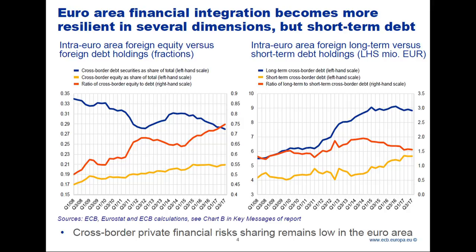A lot of good news on resilience. There is one exception shown on the right-hand side: the relative proportion of long-term debt in cross-border holdings compared to short-term debt. After a trend of more resilience after the crisis, somewhere in 2014-15 it reversed. Long-term debt holdings are relatively lower now and short-term have increased — a slight increase in short-term debt cross-border holdings relative to long-term debt — which we should monitor, because part of the enhanced resilience seen after the crisis has been a little bit reversed.